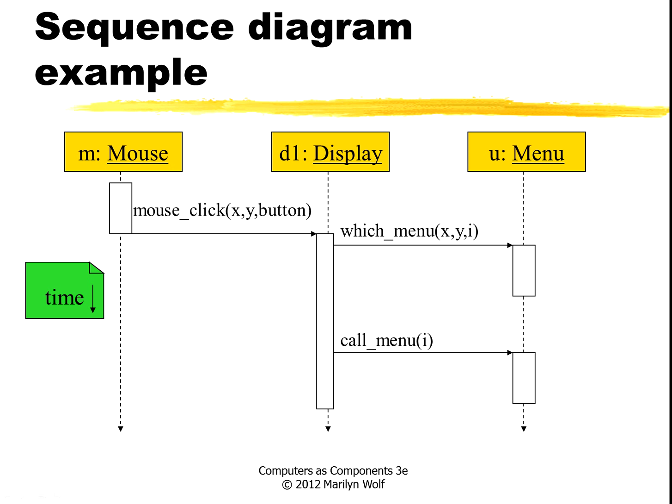So here's a sequence diagram. They're typically drawn vertically. We have the set of objects going across the page, across the screen. We have a mouse, we have a display, and we have a menu in this case. This comment just says the time is going vertically from the top to the bottom. So each object has a dotted arrow just so we can see what actions are underneath what objects. So here the mouse is active, that's what this box means, and when we get a mouse click then the display state becomes active. And it further activates two other things, which menu, and then call menu.